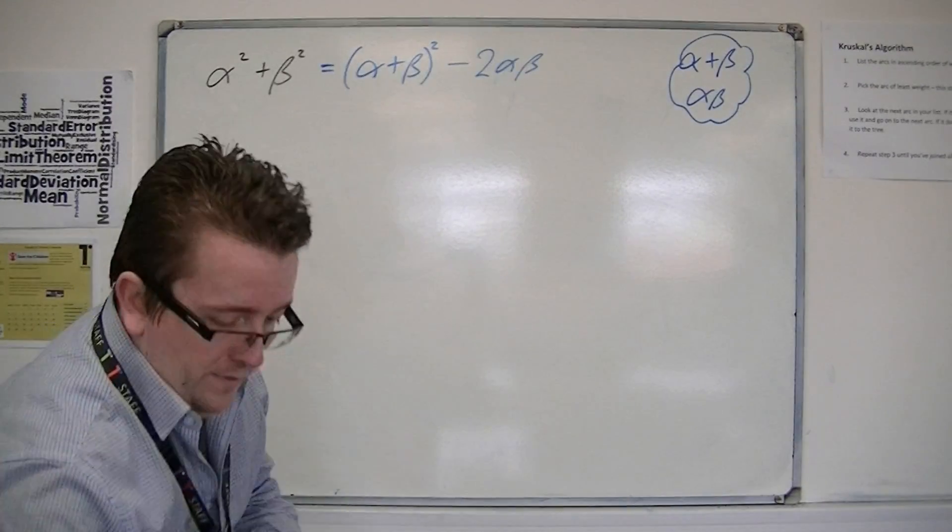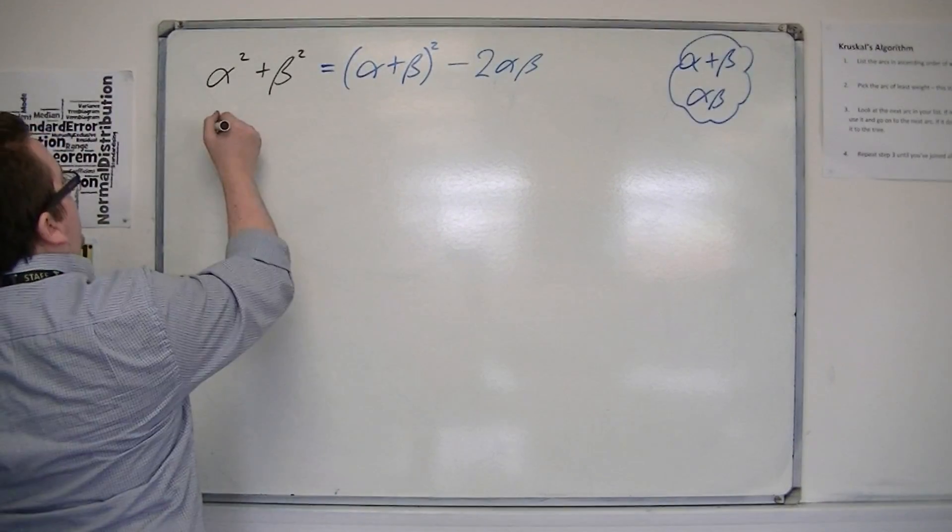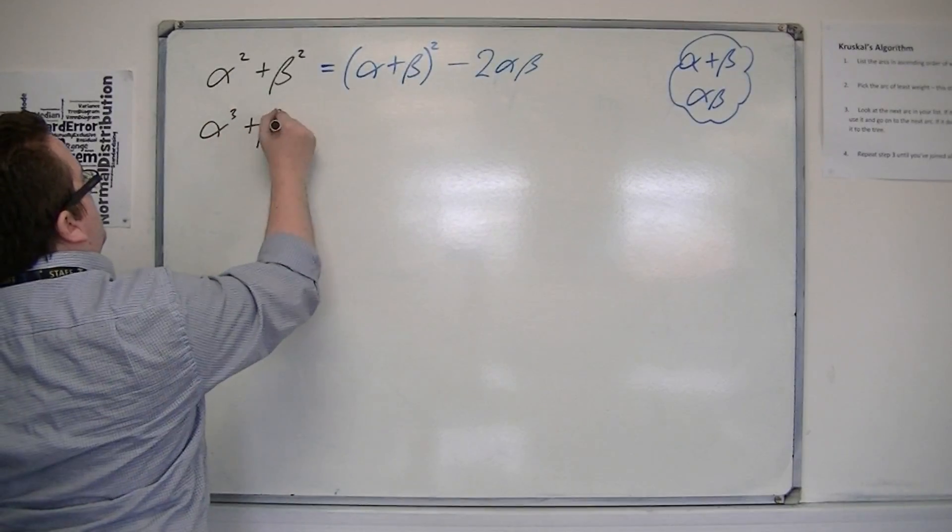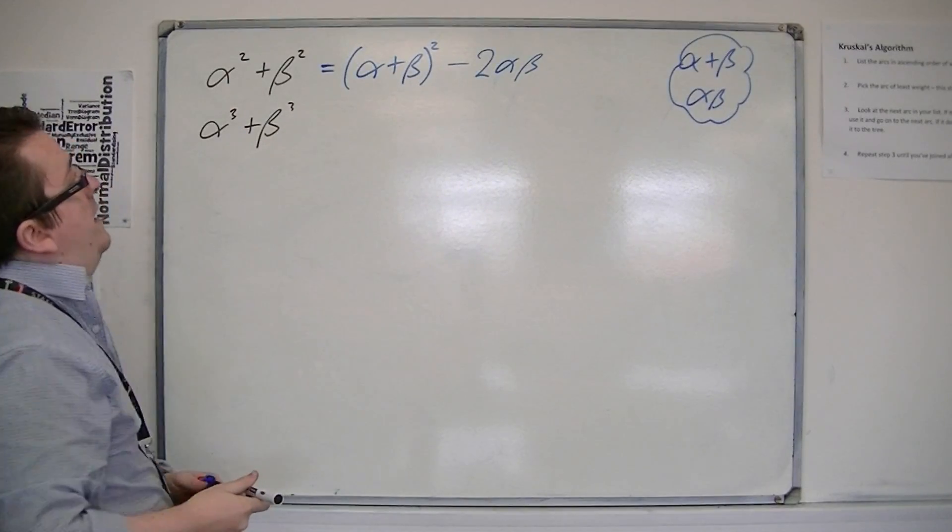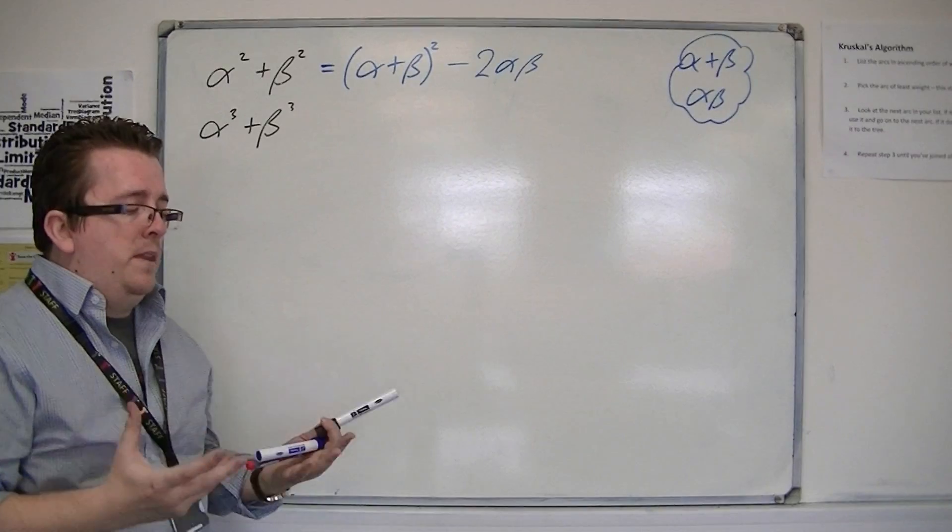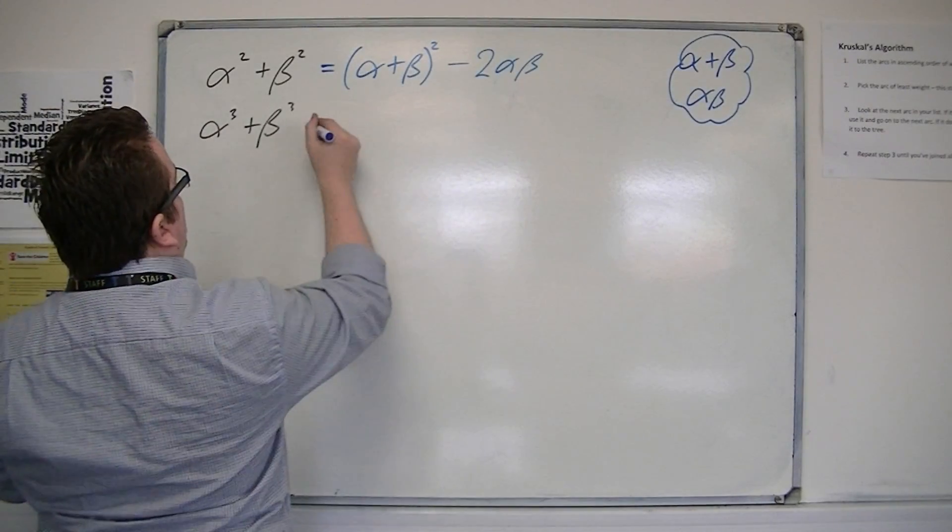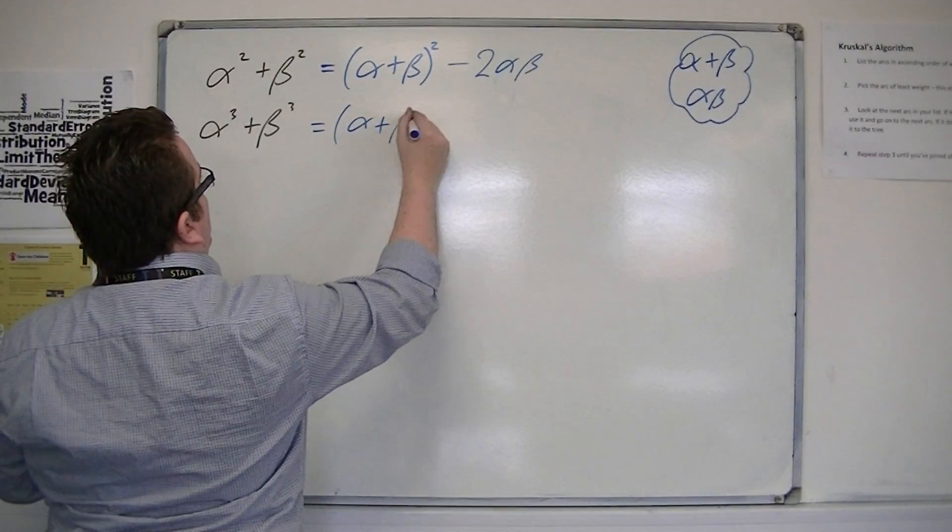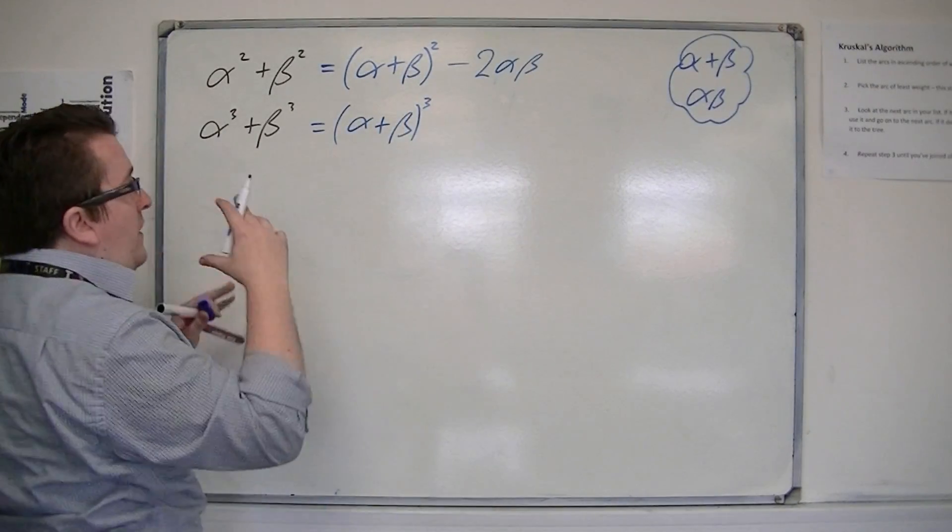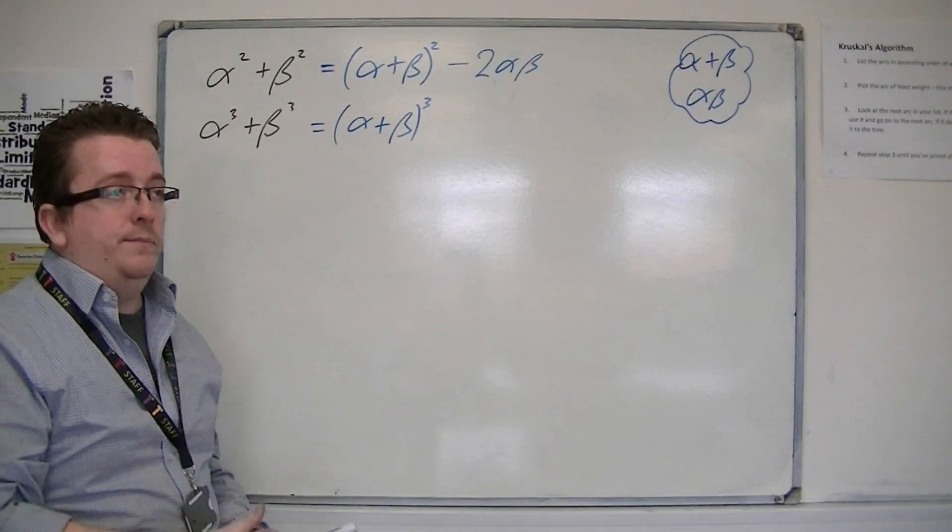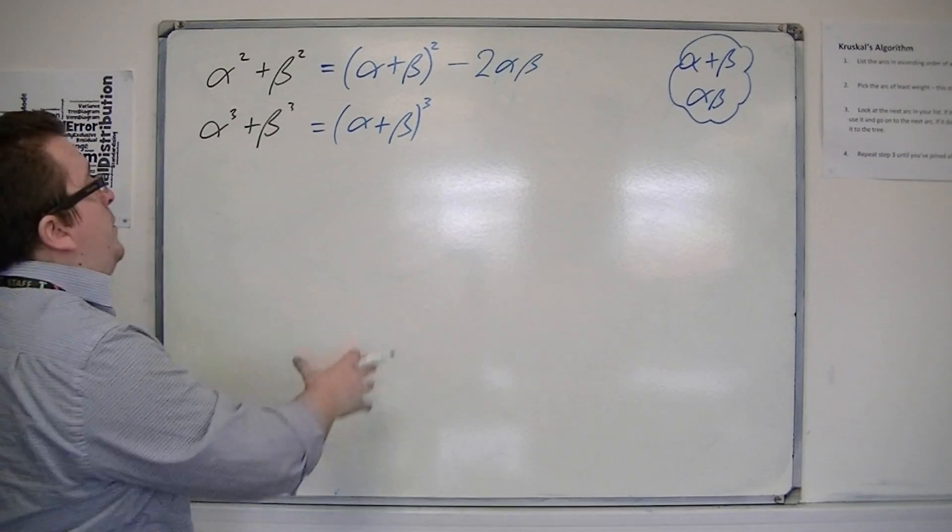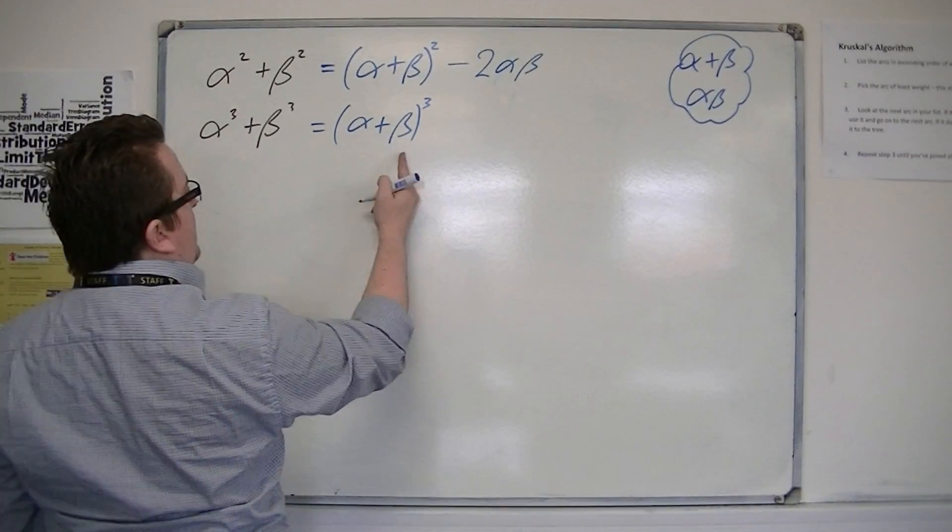Now, if I want alpha cubed plus beta cubed, maybe I can do it in the same way. Maybe I can get it from alpha plus beta cubed, and then take away the bits I don't need. If you expand alpha plus beta cubed,